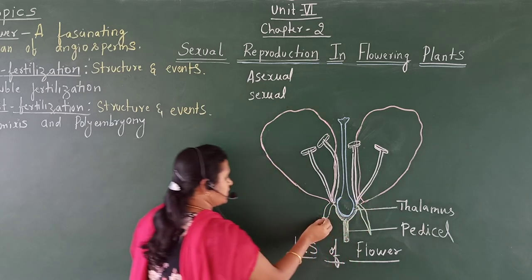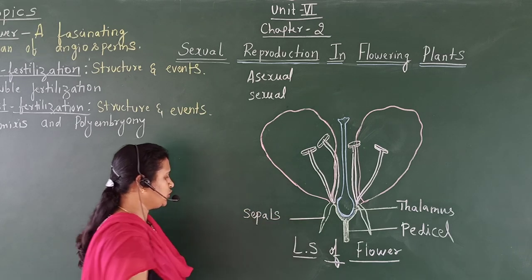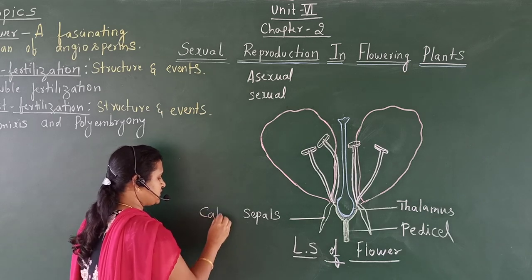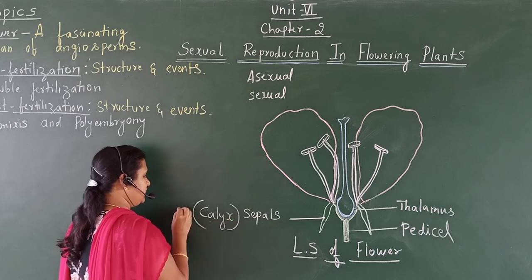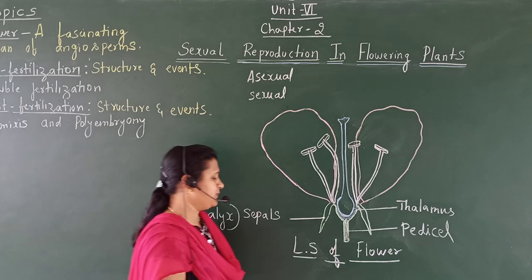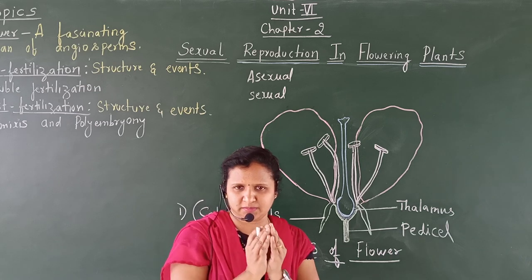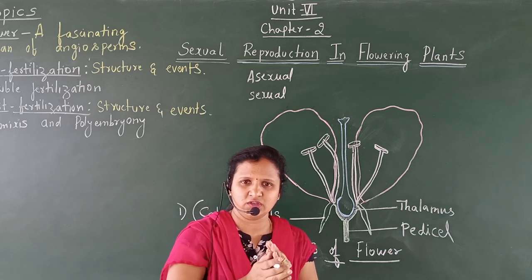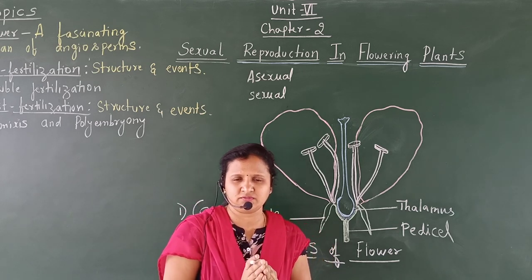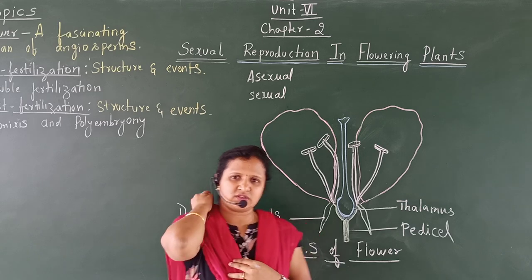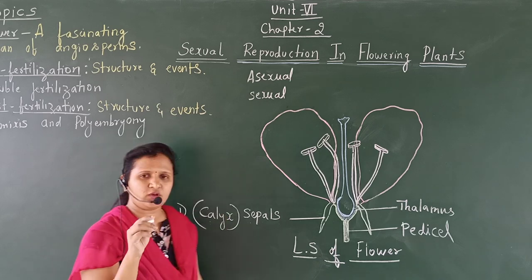The very first whorl of the flower is the sepals. A group of sepals is called the calyx — this is the first part of the flower. Sepals are green in color, and mainly when the flower is in bud condition, the sepals will cover and protect the flower. That is the main function of the sepals.